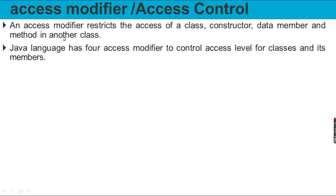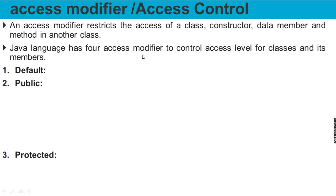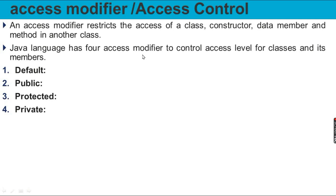Define by using access modifier. Java language has four access modifiers. You can restrict the modifiers. The four are: default, public, protected, and private.